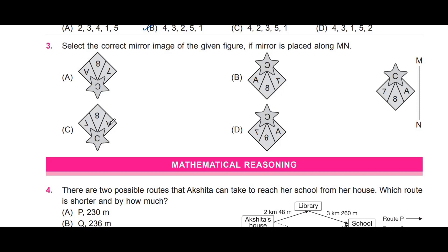Option C also has 7 written as a vertical flip — not correct. Option D has 7 on the same side as in the original picture, but it needs to swap positions with A — so D is also wrong. Option B correctly flips everything horizontally: 7 moves to A's position and A moves to 7's position, and 7 itself is horizontally flipped. A horizontal flip is correct; a vertical flip is not. So B is the right answer.